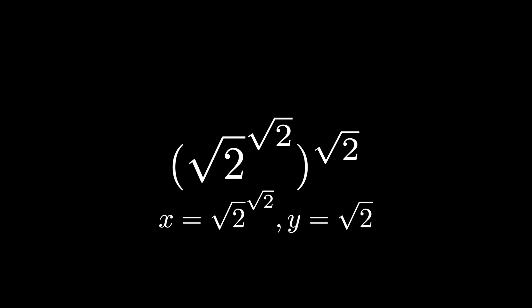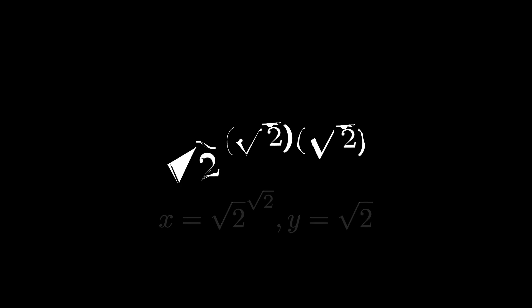Using some basic exponent rules, we get root 2 to the root 2 times root 2, or root 2 squared which equals 2, a rational.